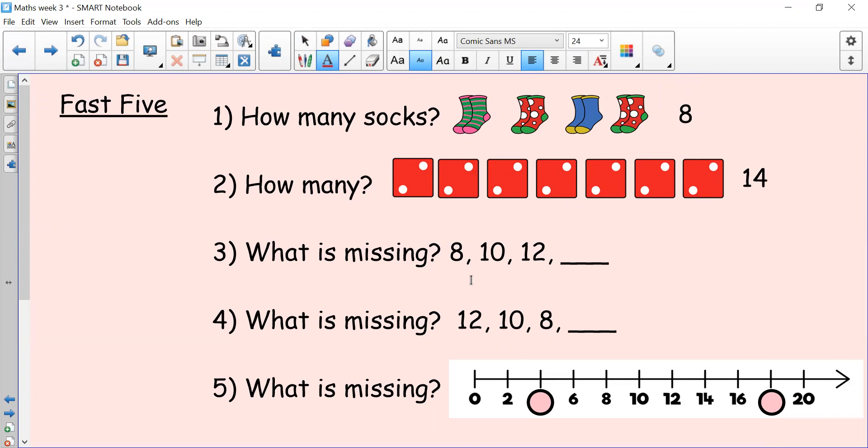And then number three, looking at the sequence of numbers, it says eight, ten, twelve. So I can see that the numbers are getting bigger, it must mean we're counting forwards, and we're adding two each time, so we're counting in twos. So the next number would be 14. Well done if you've got that.